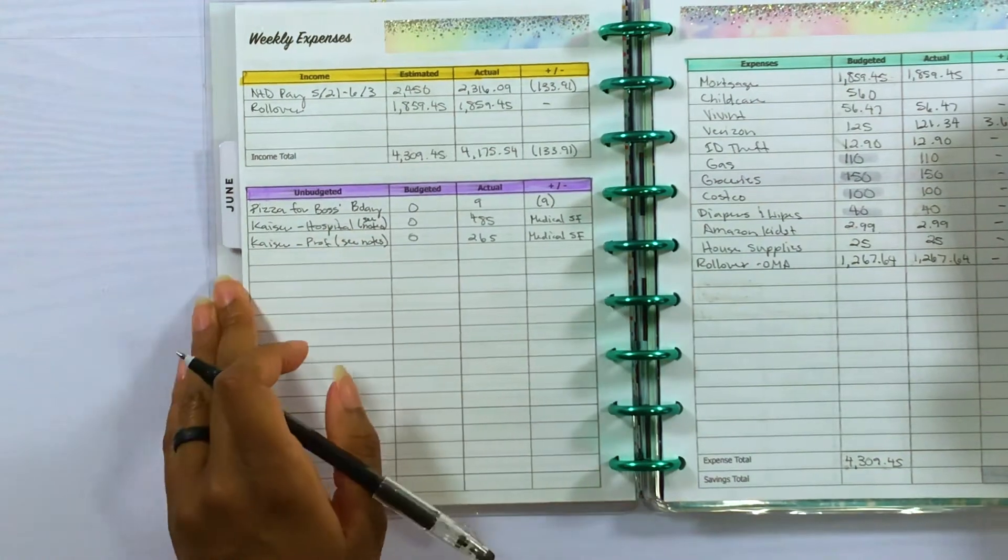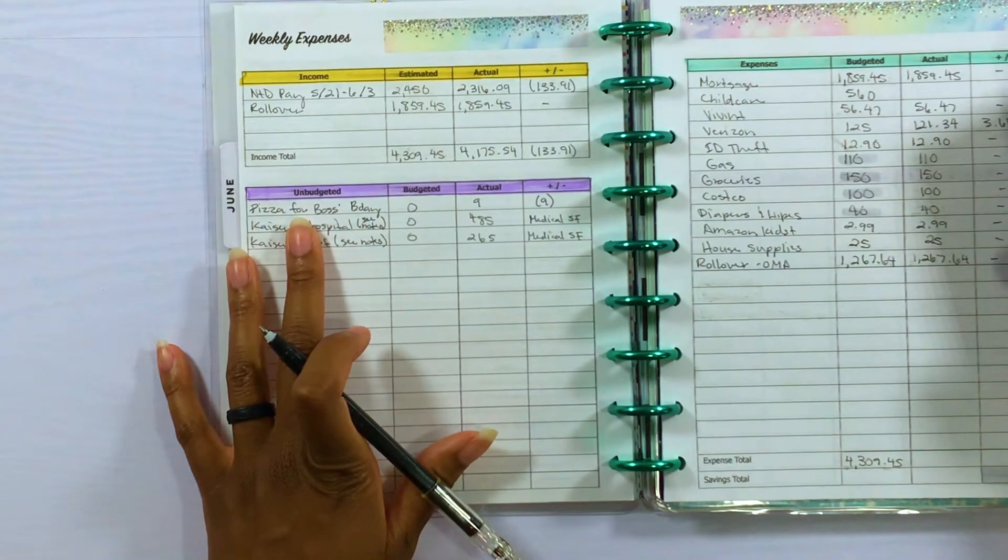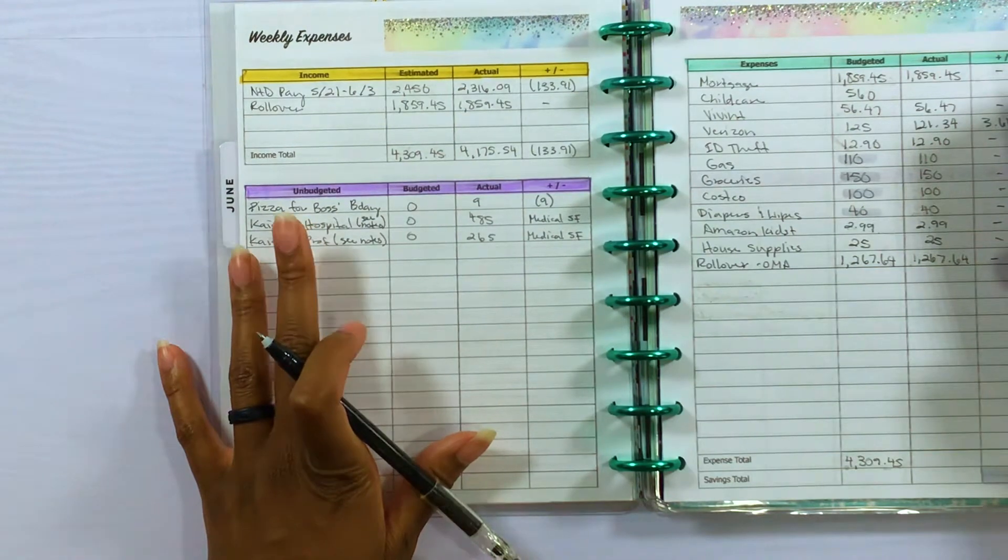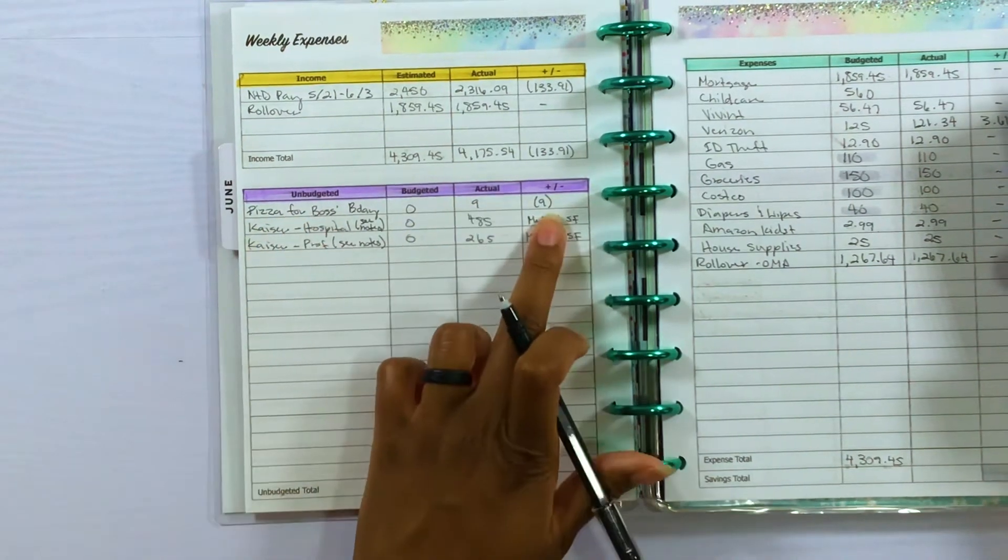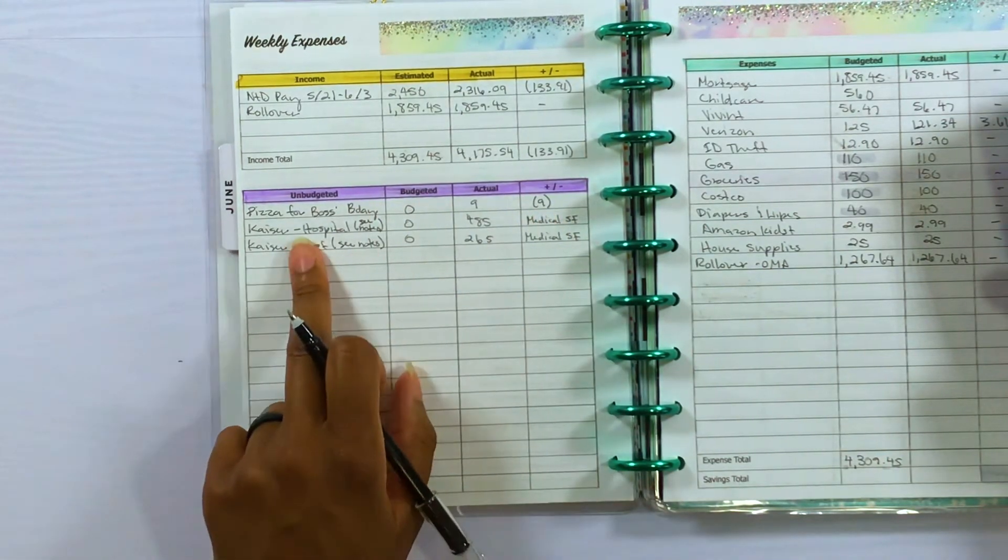So we did have some unbudgeted. I did chip in for pizza for my boss's birthday at work, so that was $9 that I didn't budget for or take out of sinking funds.